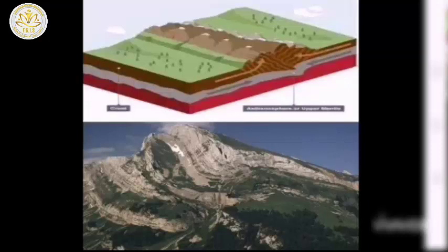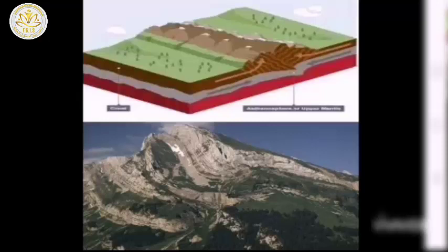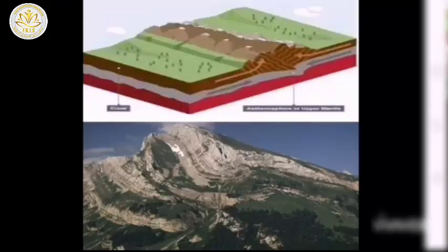Which boundary makes large mountains? Convergent boundaries make large mountains. Convergent boundaries form two types of mountains: fold and fold block mountains. Fold mountains are large mountain ranges formed when two continental plates collide at a convergent boundary. The tectonic plates are under extreme pressure and fold or crumple upward, forming fold mountains. The fold is a long ridge. Fold mountains form slowly and in stages over millions of years.